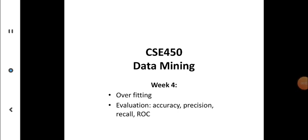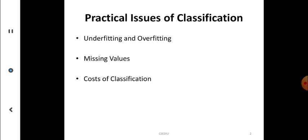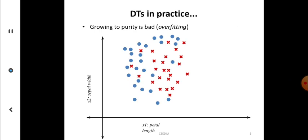Welcome. Let us talk about data mining, especially classification. When we build a model we need to look at two things: one is called overfitting and the second is evaluation. The practical issues of classification include overfitting, underfitting, missing values, and cost of classification — these three aspects are considered as practical issues of classification.